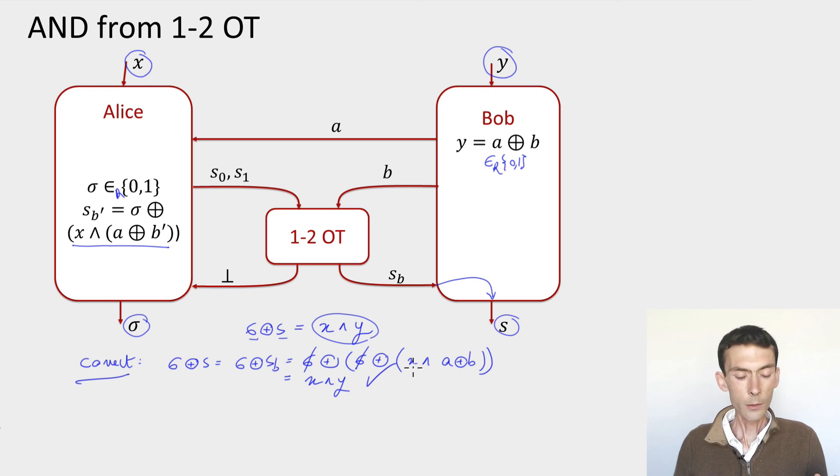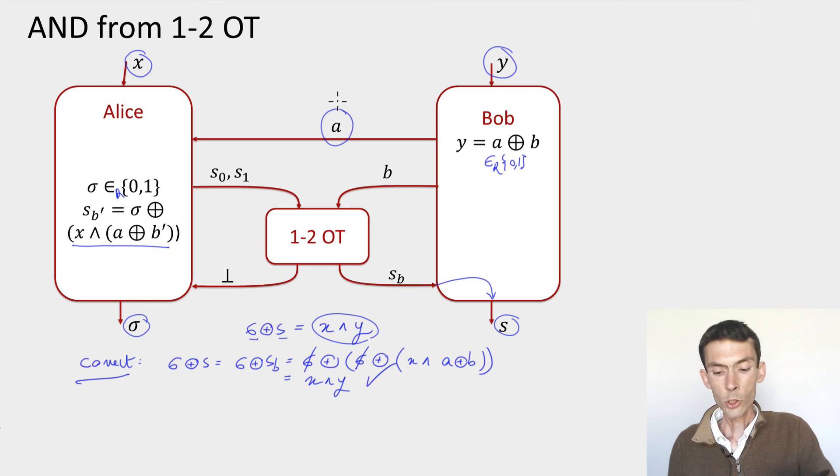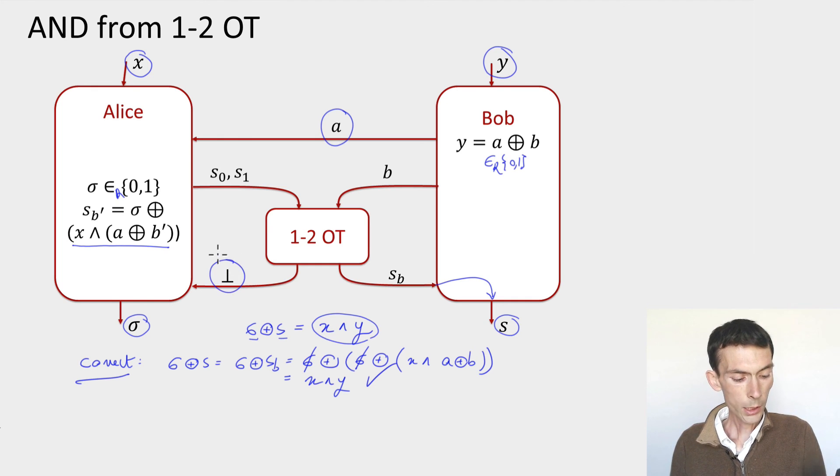How about security? Let me not argue it formally. Security against a cheating Alice is easy to verify. Because what does Alice get? She gets A, which is chosen uniformly at random by Bob. So Bob is honest. Alice is dishonest right now. She gets A. And the other thing she gets is from the 1-2 OT is nothing, this perp symbol. So the only thing she gets are a random bit and a fixed symbol. So she gets no information at all about Bob. So the protocol is secure against cheating Alice.